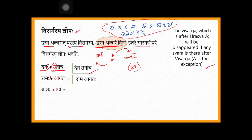Next one: ramaha agatha — here also ramaha, visarga is here. Before visarga there is 'a', after visarga there is 'a'. But this 'a' is not hraswa, it is dirga. So 'a' can be there but only 'a' should not be there — then it will become 'ramagatha'. But if there is 'ramaha asti', then 'ramasti' won't happen.